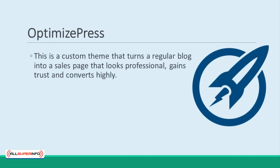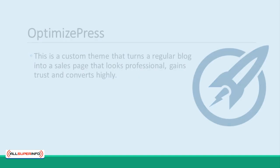OptimizePress. OptimizePress lets you add a theme to your WordPress site that is designed for selling. It turns a regular blog into a sales page that looks professional, gains trust, and converts highly.